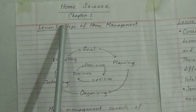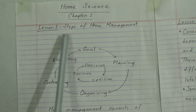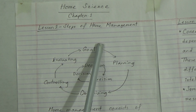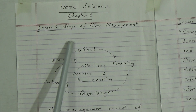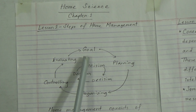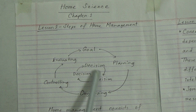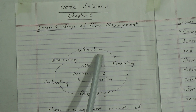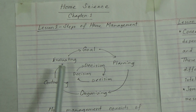Please download the book and read the chapters from there. Chapter 1, lesson 1 is 'Steps of Home Management.' When we want to manage a home, we have goals. To achieve these goals and reach a decision, we need to follow some steps: planning, organizing, controlling, and evaluating.